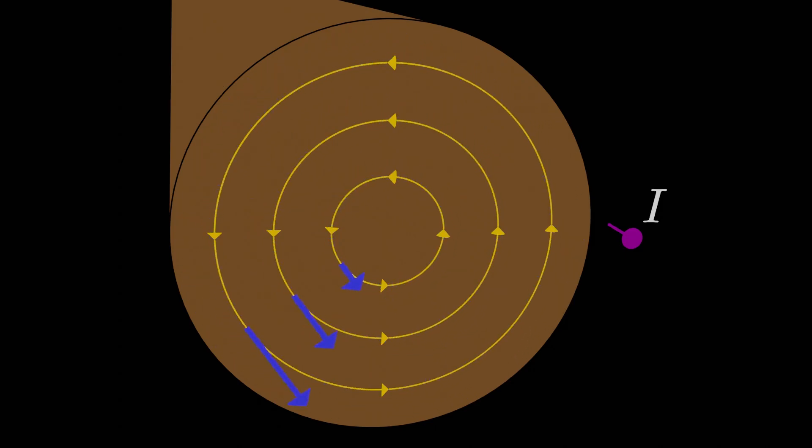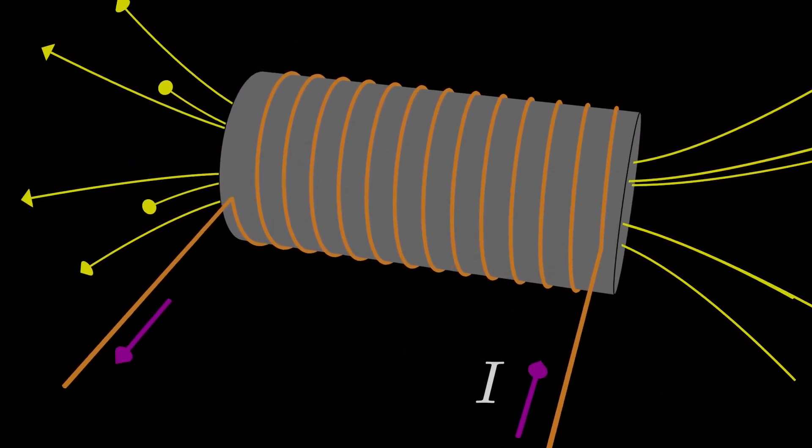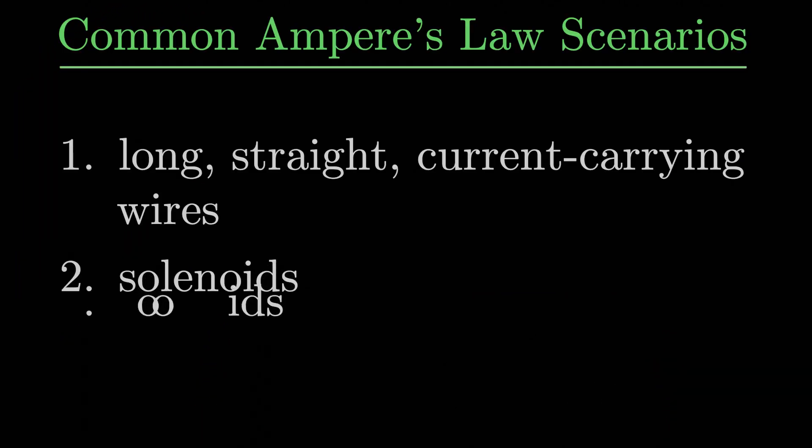The second common scenario where Ampere's law is directly relevant is the magnetic field inside a solenoid, but we got a whole separate video for that one, so we'll put that on hold for now. The last scenario is for a toroid, and actually, I've decided against including that in this video as well, because it'll help to go over solenoids first, which means we're pretty much done for this video.